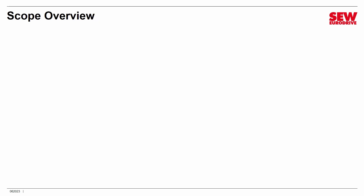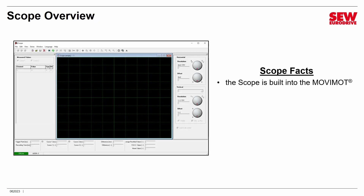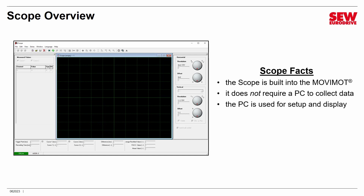Let me give you an overview of the Scope. It looks very much like a traditional bench oscilloscope. It's actually built into the MoviMod — not exactly into Movitools Motion Studio. The front end that displays the data is part of Movitools Motion Studio, but the actual Scope hardware is within the MoviMod itself.